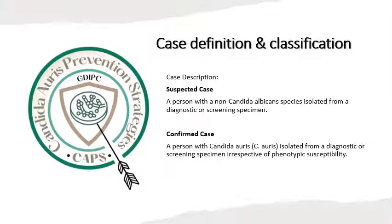Case definition and classification: a case is described either as a suspected case, which is a person with a non-Candida albicans species isolated from a diagnostic or screening specimen, or a confirmed case, which is a person with Candida Auris isolated from a diagnostic or screening specimen, irrespective of phenotypic susceptibility.